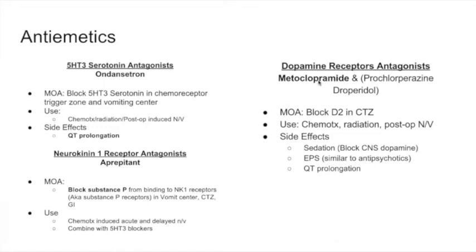The next class is dopamine receptor antagonists. Examples include metoclopramide, prochlorperazine, and droperidol. The most important one is metoclopramide. Metoclopramide blocks the dopamine receptor in the chemoreceptor trigger zone and is used for chemotherapy-induced nausea and vomiting, radiation, and post-op nausea and vomiting. Side effects include sedation because it blocks CNS dopamine, extrapyramidal side effects similar to antipsychotics, and QT prolongation.